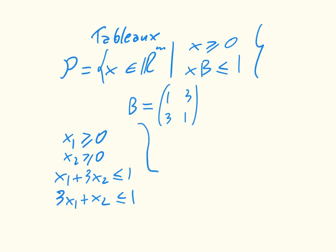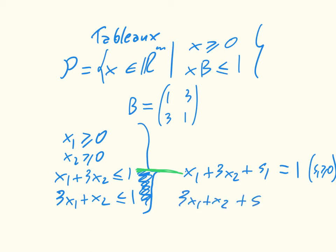The first thing we're going to realize is that this can actually be written in a slightly different way. We can just say that's x1 plus 3x2 plus some variable s1 equals 1. As long as s1 is greater or equal to 0, then these two things are equivalent. Similarly, 3x1 plus x2 plus some other variable s2 equals 1, and again for s2 greater or equal to 0, and we call these slack variables.